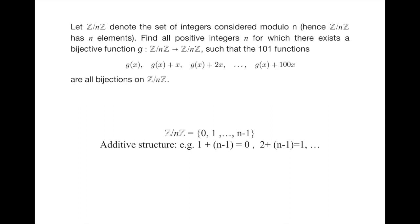The question is to find all positive integers n for which there exists a bijective function g from Z/nZ to itself, such that the following 101 functions are all bijective. These functions are g, g(x)+x, until g(x)+100x.